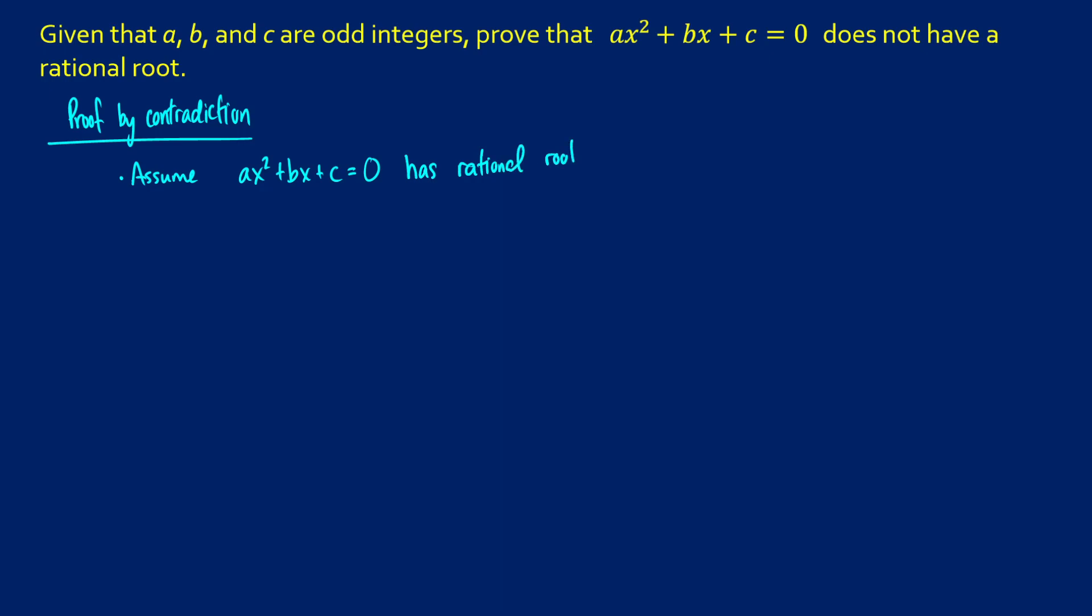Now, what does that mean? What that means is that we would have x equals m over n, where m and n are integers, and n is not equal to 0.